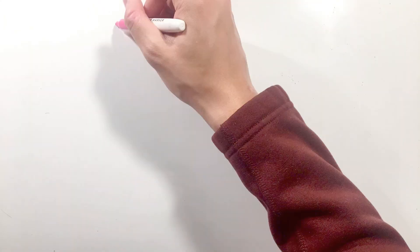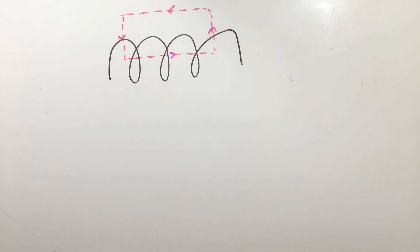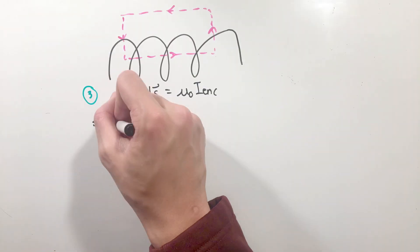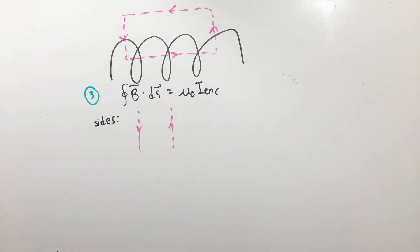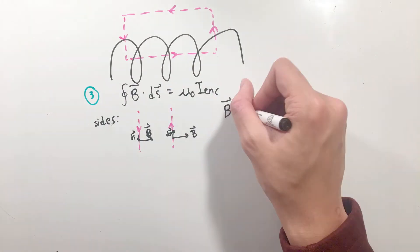Finally, let's plug these values into Ampere's law. For the left and right sides of our rectangle, the integral will actually become zero, as the B and ds components are perpendicular to each other, making their dot product zero.